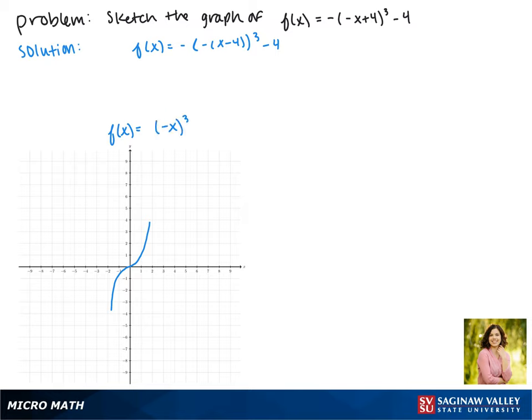Because we're cubing a negative x, this reflects our function across the y-axis. Next, because we have a negative outside, this reflects our function across the x-axis.